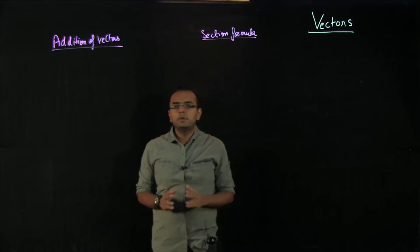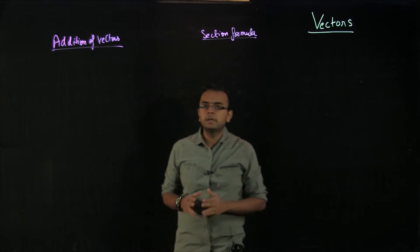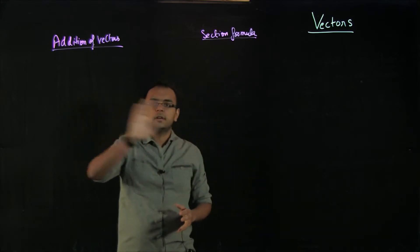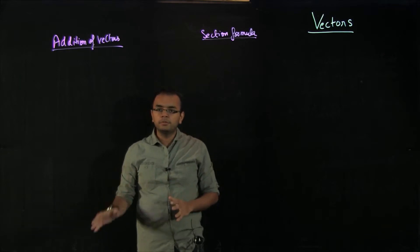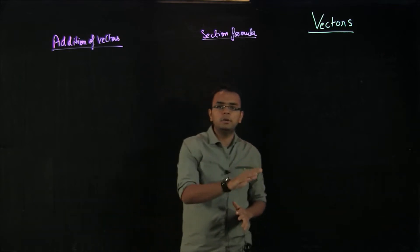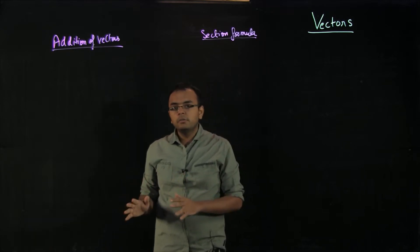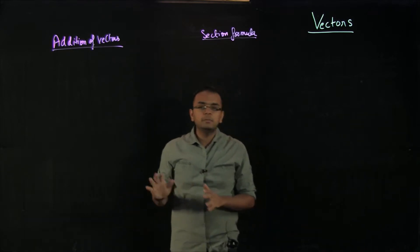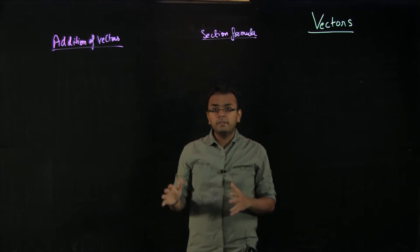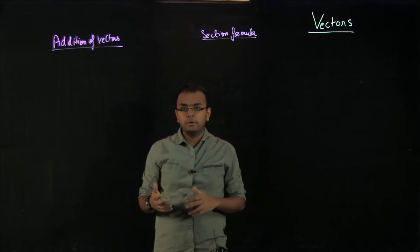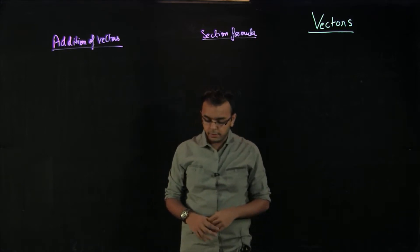Hi everyone. In this video we will be discussing two topics for vectors: addition of vectors and section formula. In the first video we discussed very basic things like position vector, line vector, free vector, unit vector and its magnitude. I hope that you have watched that video because it is very important to know these basic concepts. Now we have defined vectors, but we should also know how to add vectors, and that is the idea behind this video.